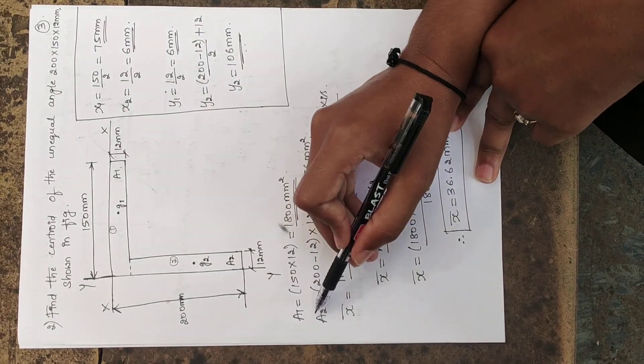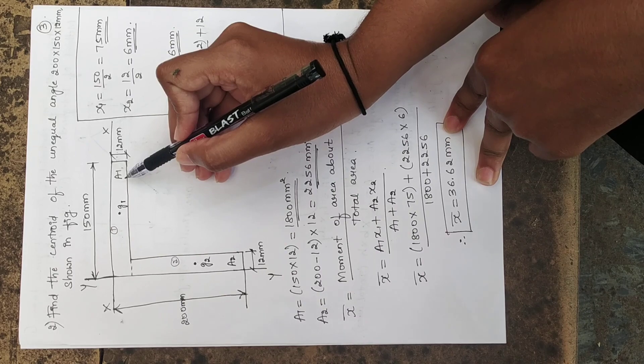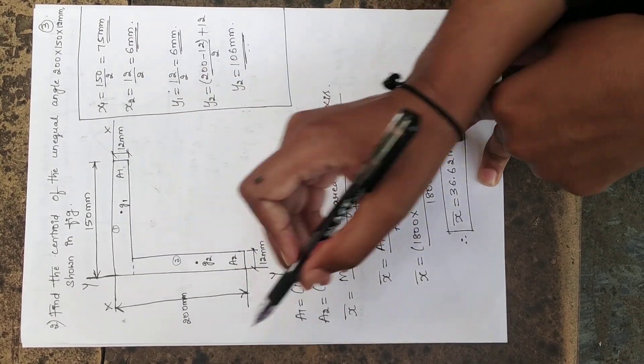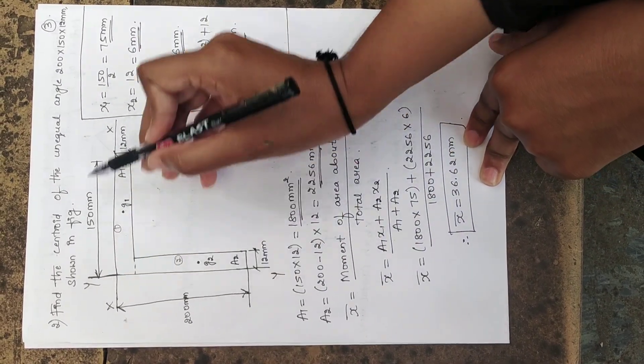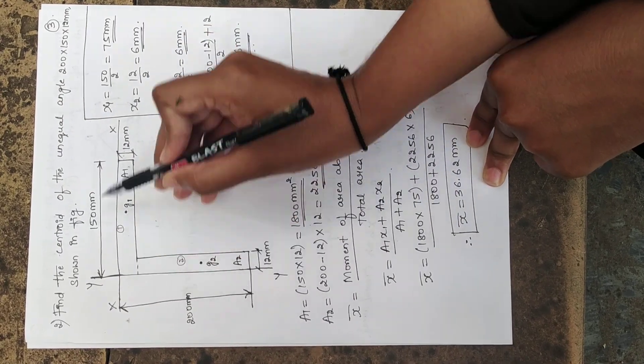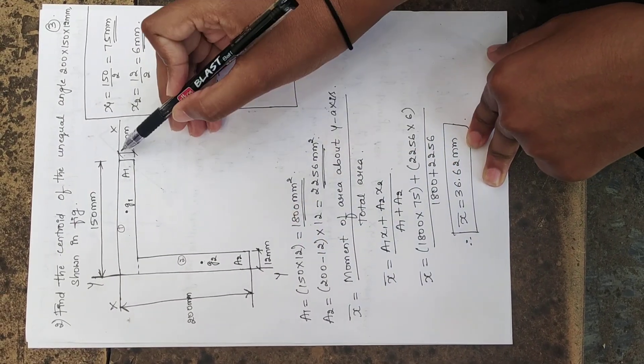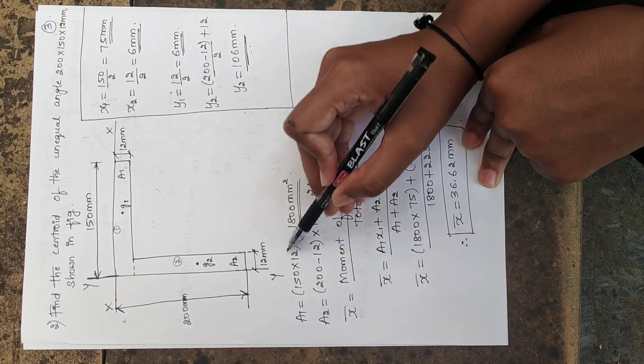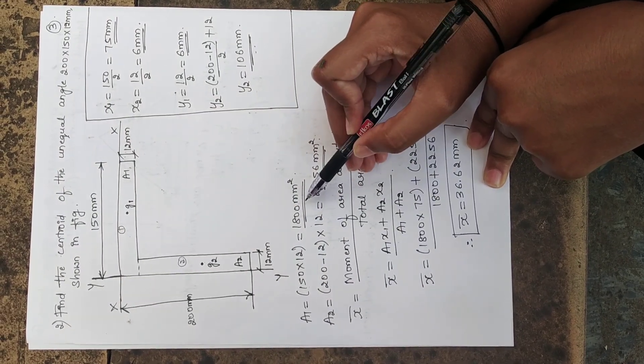Now, let us start finding the areas. To find the value of A1, we have to write the formula as length into thickness. Here, the length of the first portion is 150 into the thickness is 12. On simplifying this, you will be getting 1800 mm square.